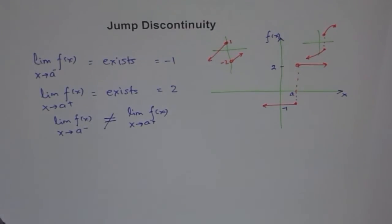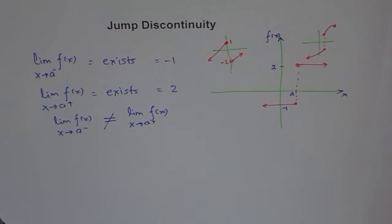You have many examples where we have jump discontinuity. Income tax brackets, for example — if you are within this bracket, this percentage of tax will be charged. Telephone bills — so many calls are free, so many calls at this rate, more than so many minutes you will be charged that much. There are a lot of real-world applications of jump discontinuity.